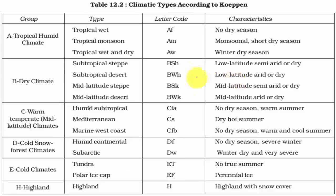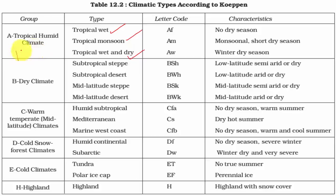Under the Köppen scheme we mainly have 6 different types. We have studied about the first type, which is called the tropical type of climates. In the tropical type we have 3 subtypes: tropical wet, also called equatorial rain forest type; tropical monsoon; and savannah type, also called tropical wet and dry. In the tropical regions, rainfalls vary between 150 to 250 cm.